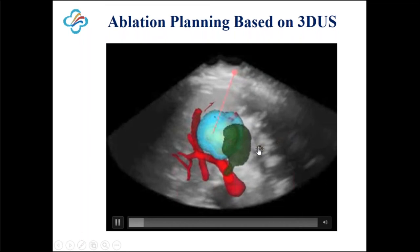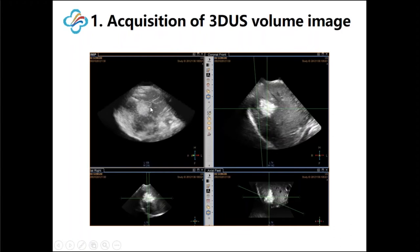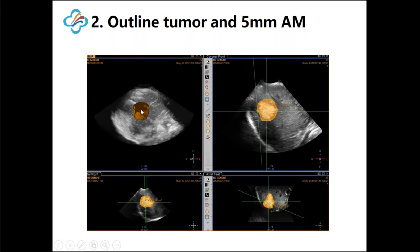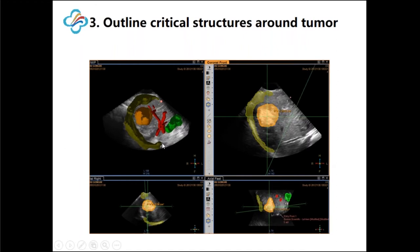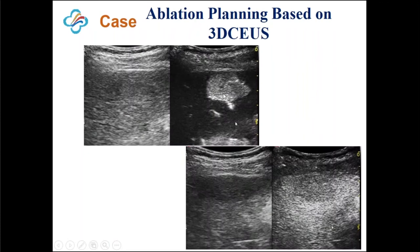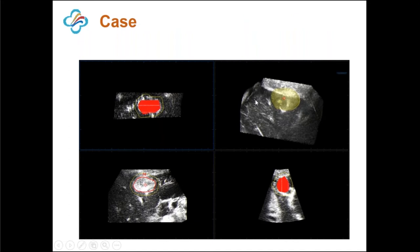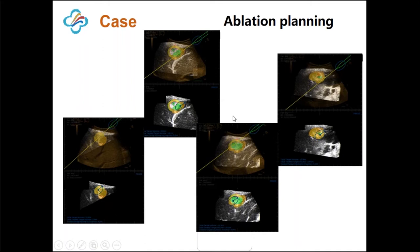Besides MR and CT images, we can also do planning based on 3D ultrasound. We acquire the 3D ultrasound volume image, outline the tumor with a five-millimeter ablative margin, and mark critical structures around the tumor in different colors. For this case, planning is based on 3D CEUS — the tumor is marked in red and the five-millimeter ablative margin in yellow — then we do the ablation according to the planning.